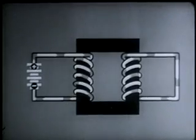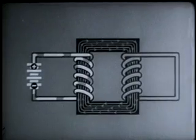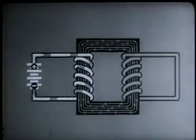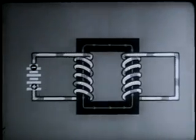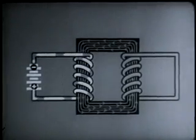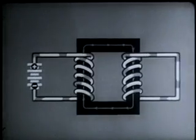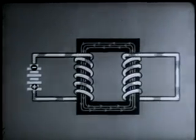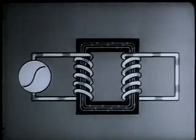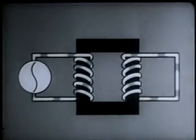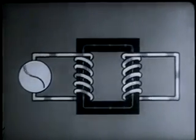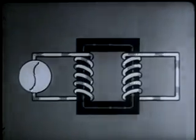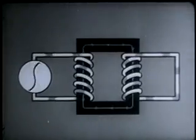Now let's consider alternating current. We'll first give you an idea of how it works by sending direct current through the coil, first in one direction, then in the other. Notice that the induced current in the second winding reverses each time the supply current is reversed. Now let's speed it up — the two currents begin to resemble each other. By replacing the battery with an AC generator, we get a true alternating current, which is reproduced almost exactly in the second winding. Here's the second important fact about a repeating coil: it repeats alternating current practically unchanged.